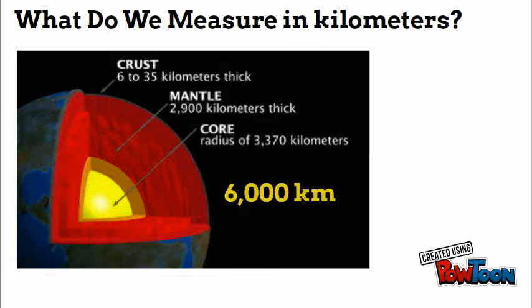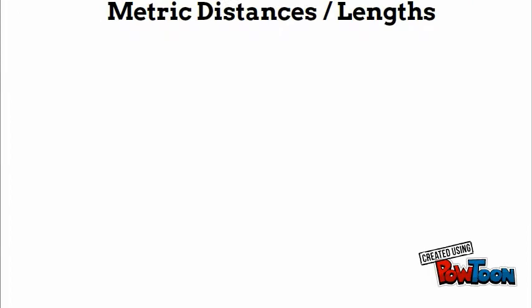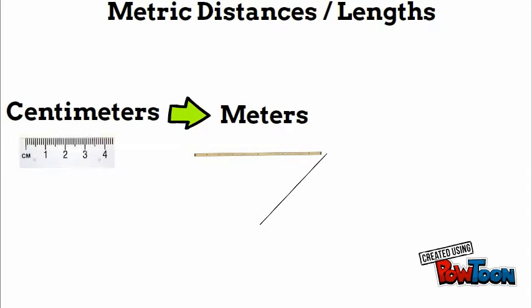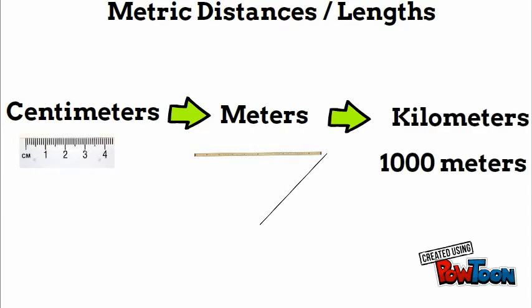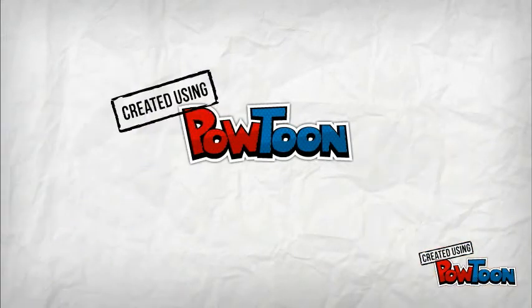So to recap, centimeters are a smaller measurement. 100 centimeters gives you one meter, and 1,000 meters gives you one kilometer. So from smallest to biggest, you have centimeters to meters and then kilometers. Thanks for watching, see you next time.